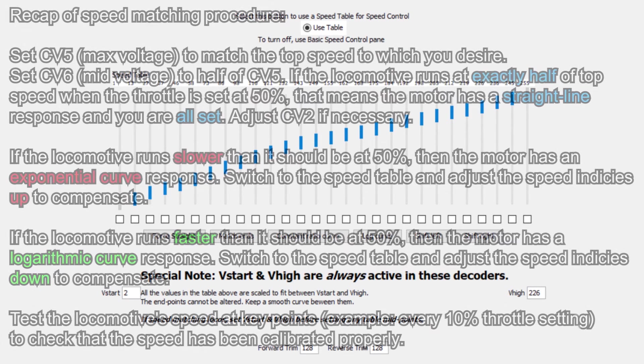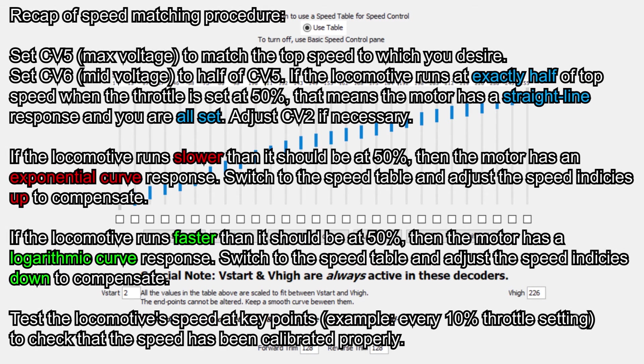You can do this for every single locomotive you have so that they all run at the same speed, or you can also just do it for the locomotives that you plan on running together. It is important to note that the speed calibration will be different for every single locomotive and decoder combination, so it is okay if the speed curve from one locomotive looks slightly different to the next. Sometimes even if you have two identical locomotives with identical decoders, the calibration will still be slightly different because of the slight variances in motor performance.